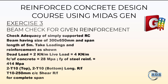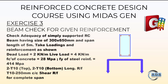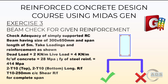The problem statement is: check the adequacy of a simple RC beam having a size of 300 by 650 mm and a span length of 5 meters. All the loadings and material properties have been discussed in the previous video. The reinforcement details are two 10 mm diameter bars for top and bottom as longitudinal reinforcement, and 10 mm diameter bars at 250 mm center-to-center spacing as shear reinforcement for the complete span. We will check whether this beam has adequate strength for the given loadings.